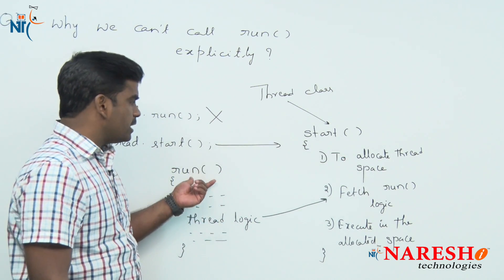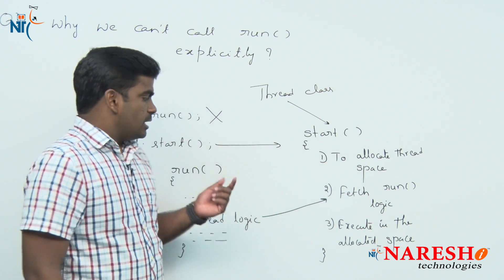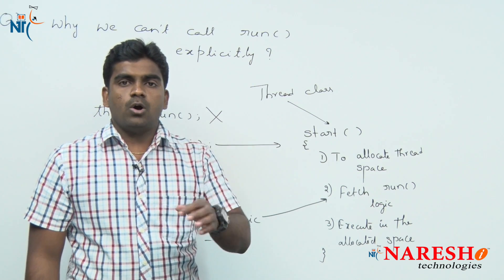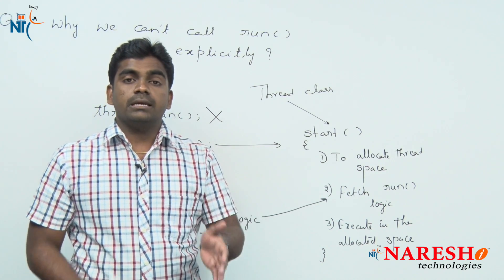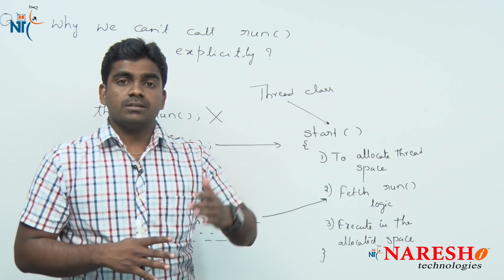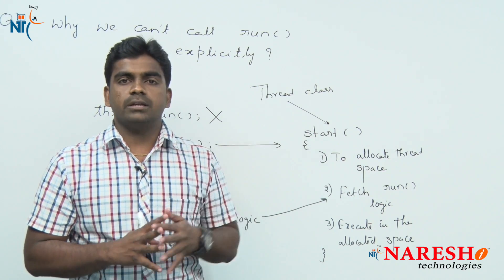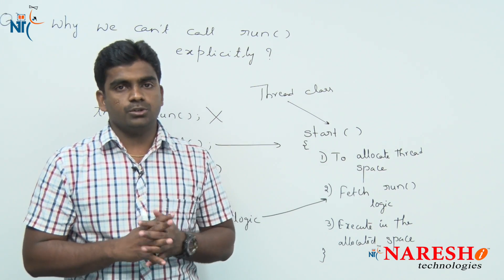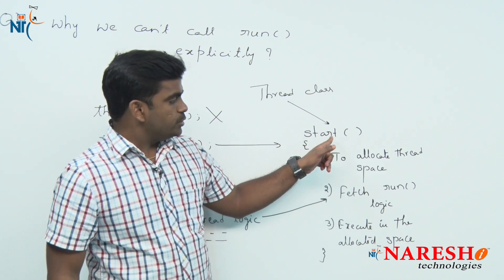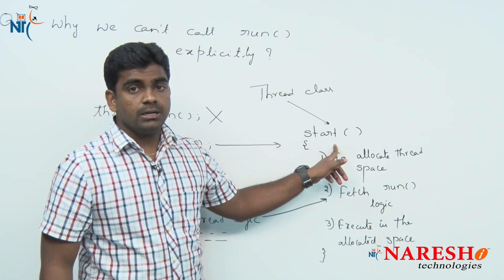Suppose if I call the run method directly, then what happens? That run method executes just like an ordinary method in the current thread space only. A separate thread space will not be created — that is certain. Just try it.